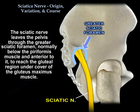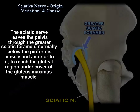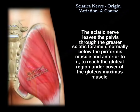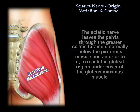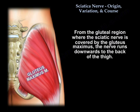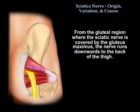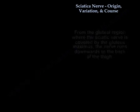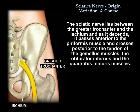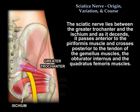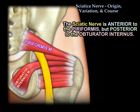The sciatic nerve leaves the pelvis through the greater sciatic foramen, below and anterior to the piriformis, to reach the gluteal region under cover of the gluteus maximus. From there, the nerve runs downward to the back of the thigh. It lies between the greater trochanter and the ischium as it descends, passes anterior to the piriformis, and crosses posterior to the tendons of the gemelli, the obturator internus, and the quadratus femoris. So the nerve is anterior to the piriformis but posterior to the obturator internus.